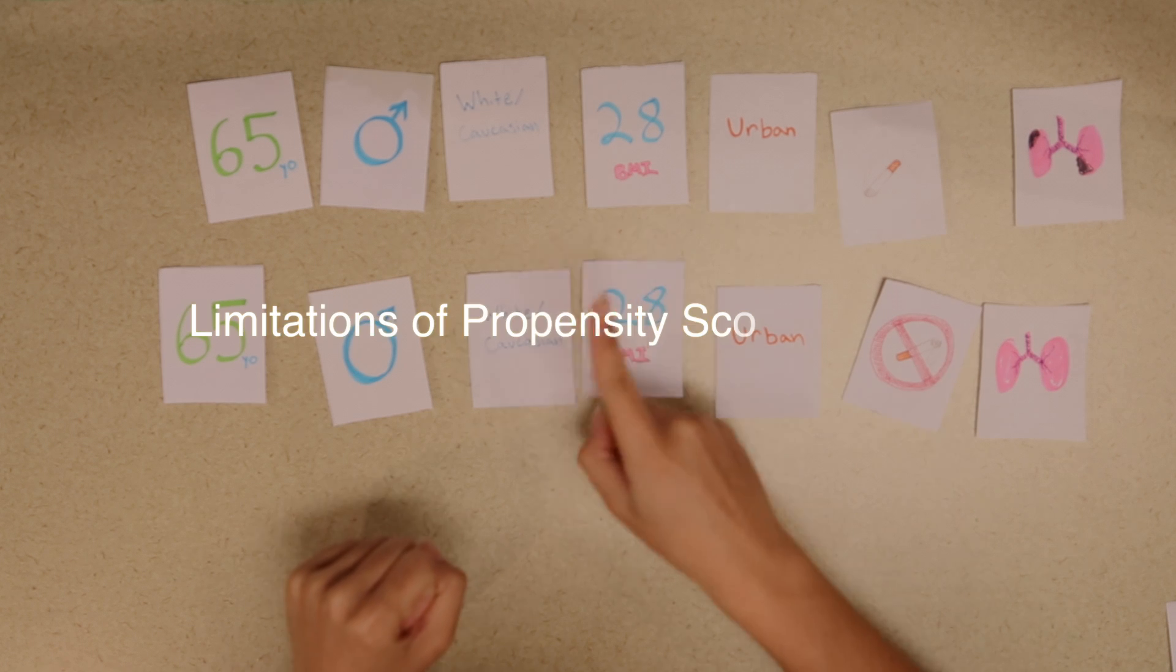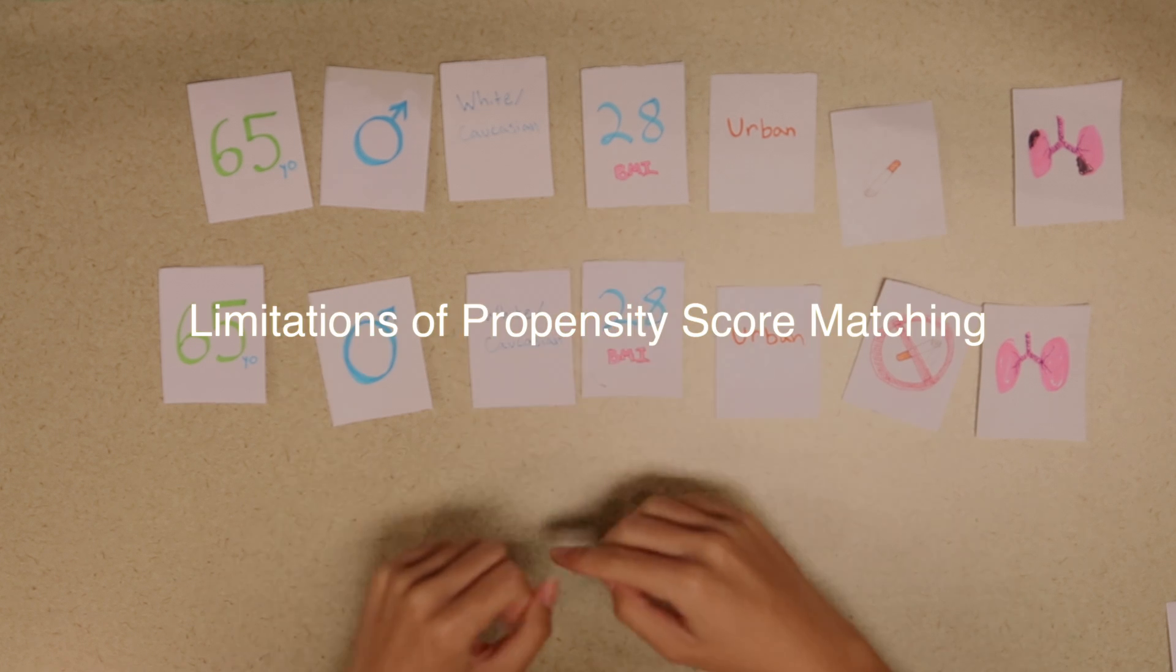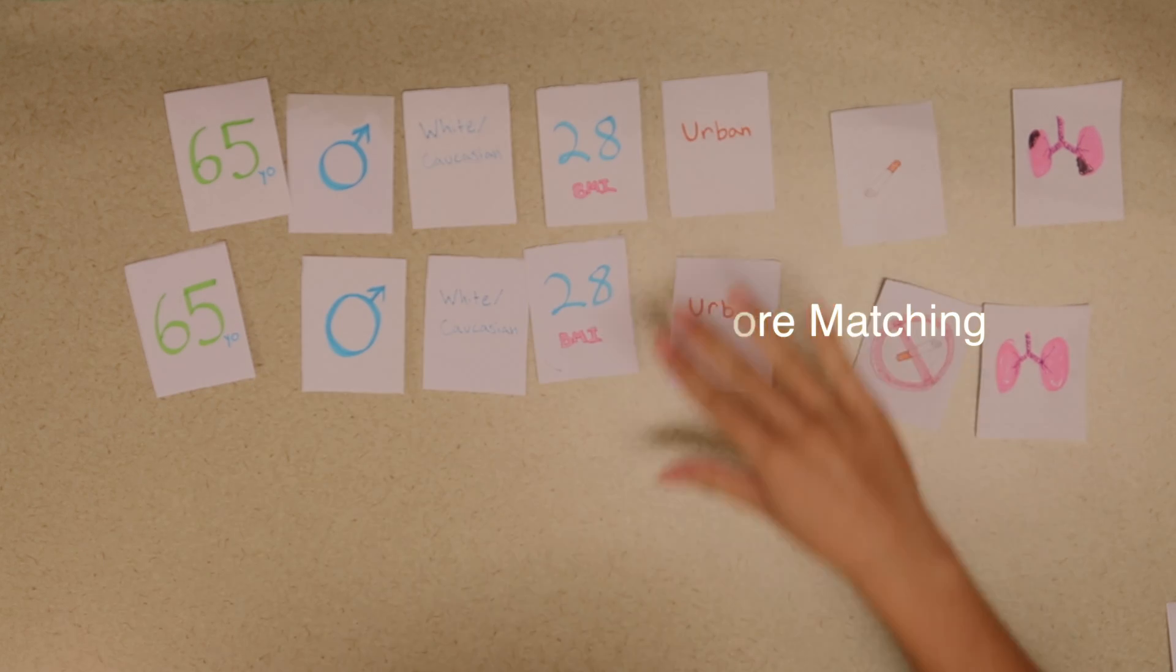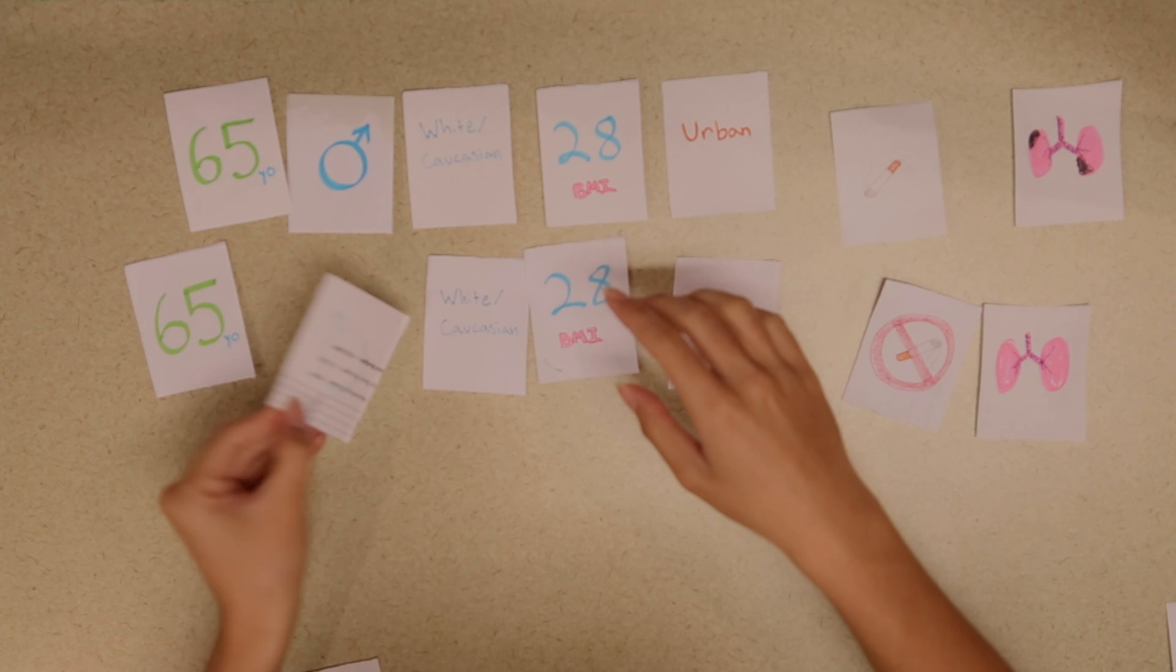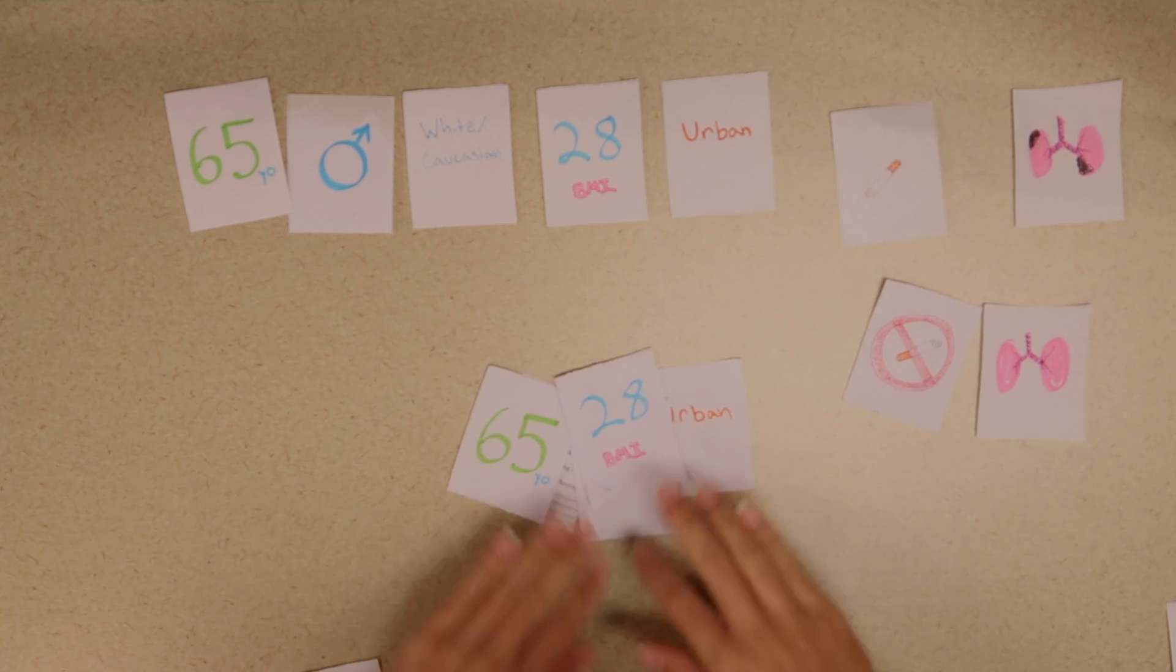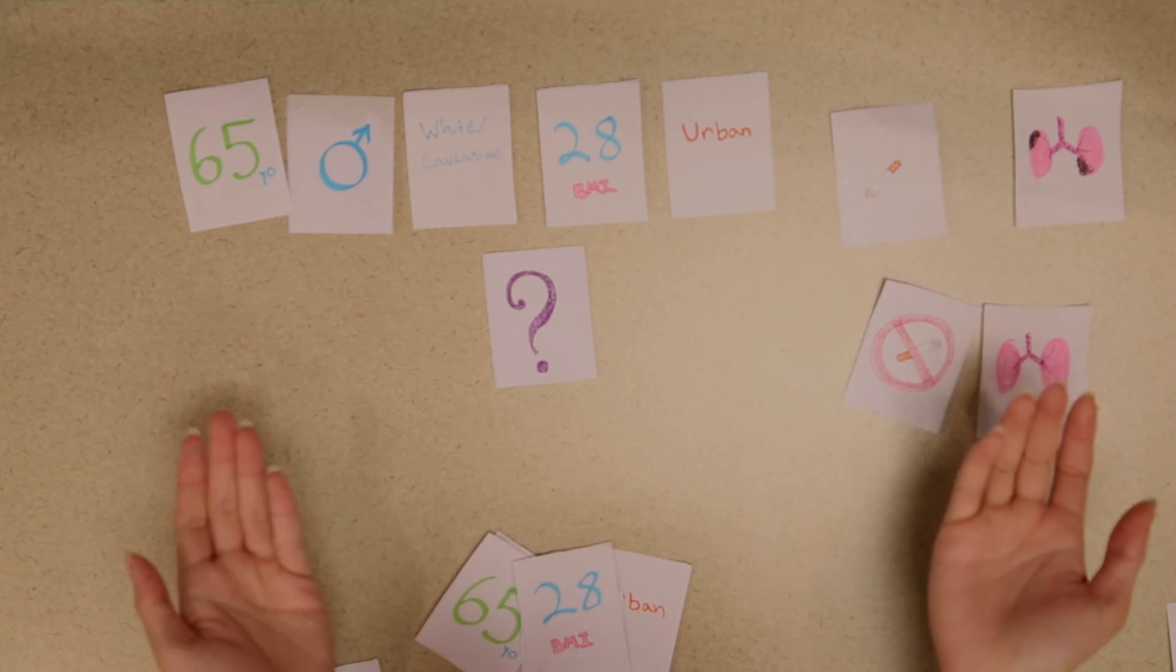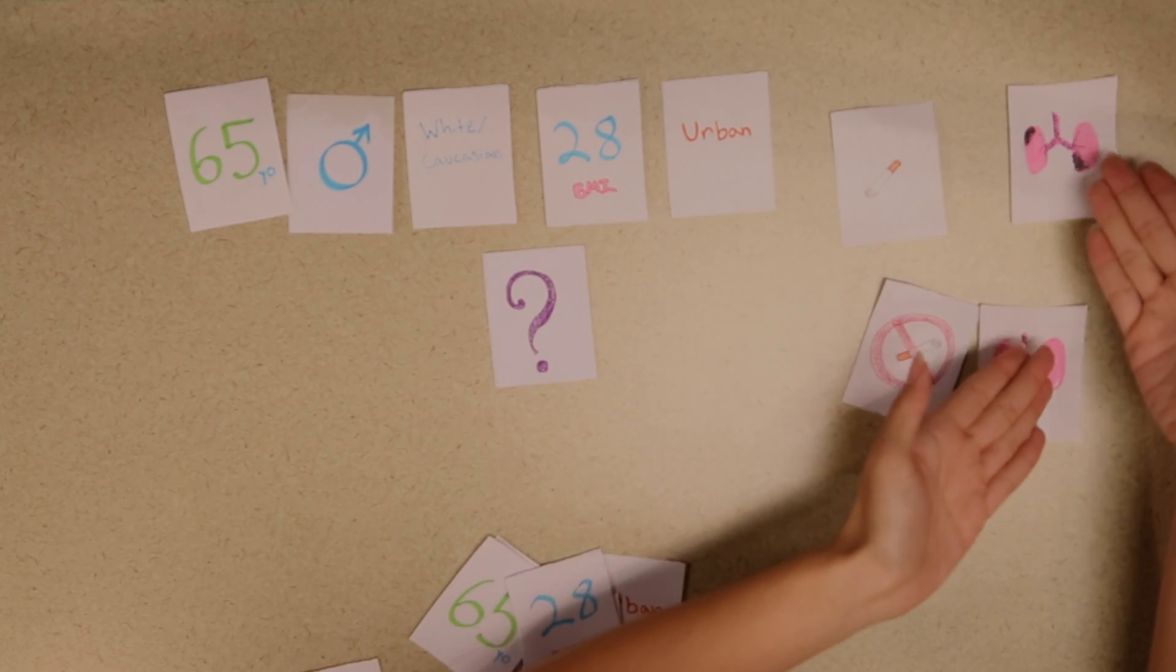There are some limitations with propensity score matching, however. For one, the more confounds you try to match for, the harder it will be to find people who match on all of your criteria. Also, there might be some confounds that can't be matched for and might have an effect on your results.